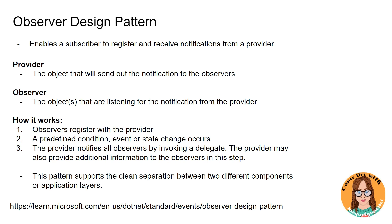An additional thing that we can do when dealing with events is we can also provide additional information from our provider that will help the observer do something. So in our case for our inventory, we're going to have to tell the observers what happened — what changed — otherwise we won't be able to update the UI appropriately. The reason we're going to be using this pattern is because it supports the clean separation between two different components. Our inventory UI won't need to know about our inventory after it subscribes to the event, and our inventory won't know anything that's happening after it sends out that event — it doesn't know who's listening to it.